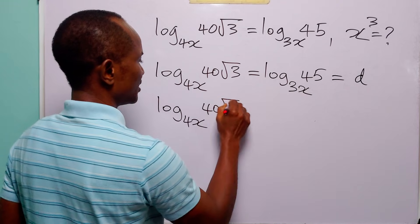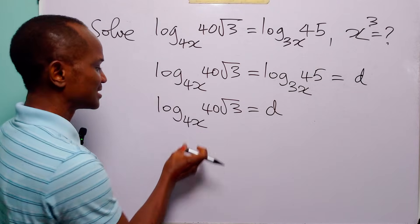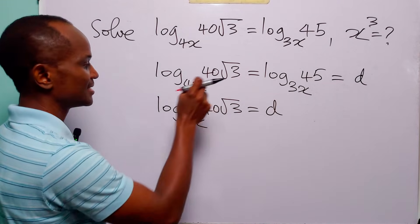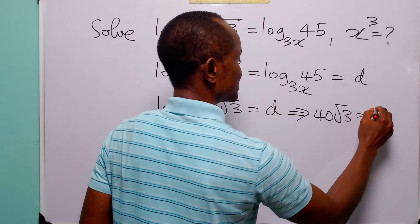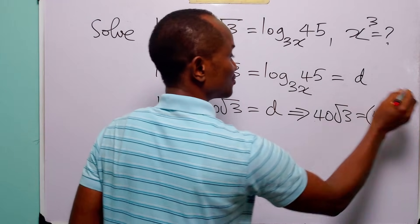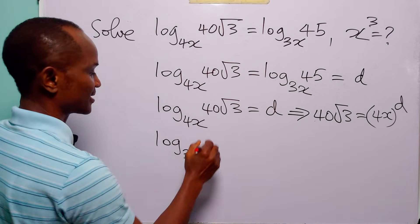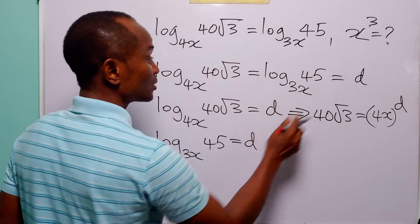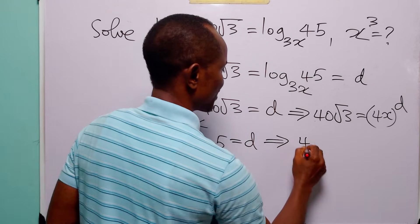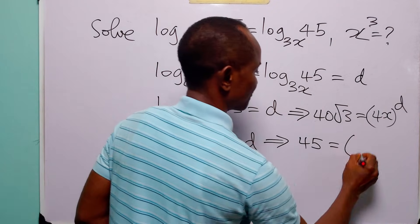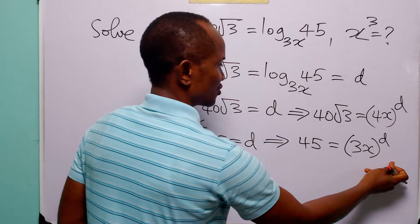From this we have that log base 4x of (40√3) is equal to d. Remember that when we have a statement like this, it simply means that 4x raised to the power d is equal to 40√3. Also from the equation, log base 3x of 45 is equal to d, which means 45 is equal to 3x raised to the power d. We now have two equations in two unknowns, x and d.